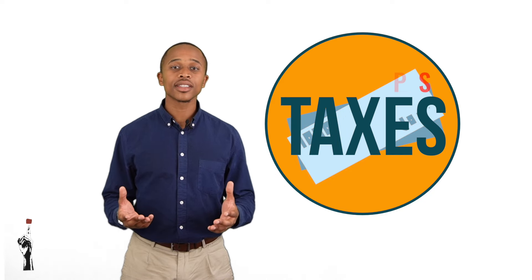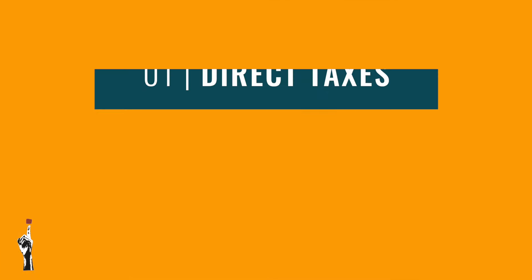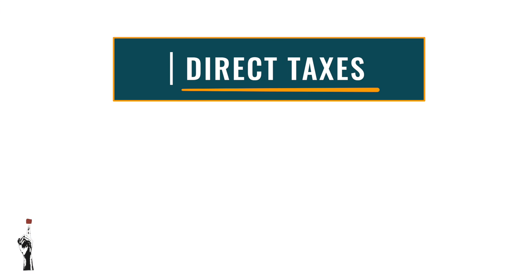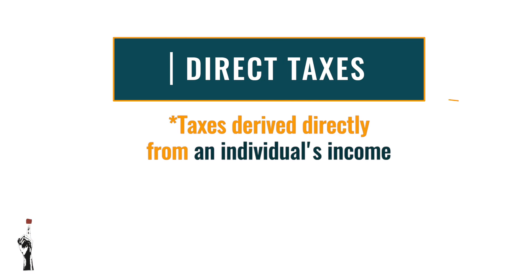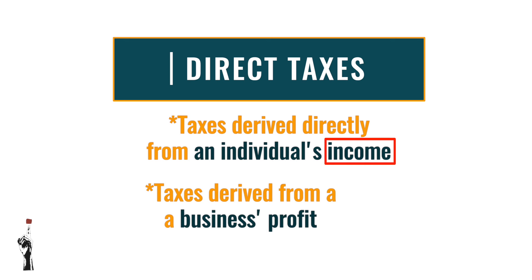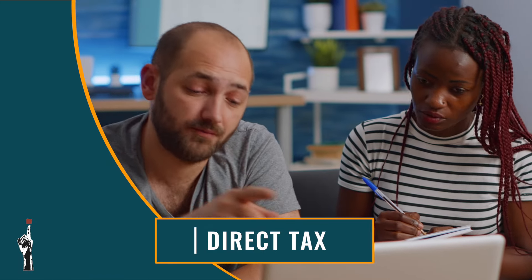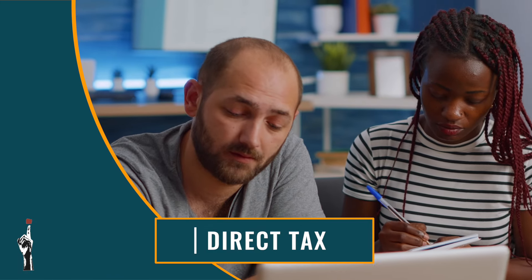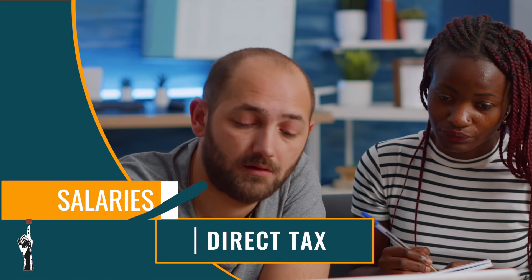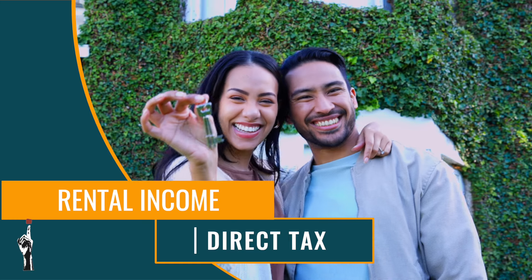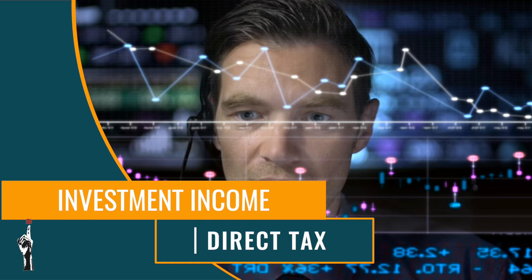Taxes come in two forms: direct taxes and indirect taxes. Direct taxes are taxes derived directly from people's income as well as businesses' income. There are a few types of income tax, such as tax derived from salaries, rental income, and income received from investments.